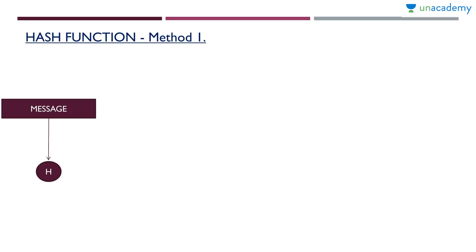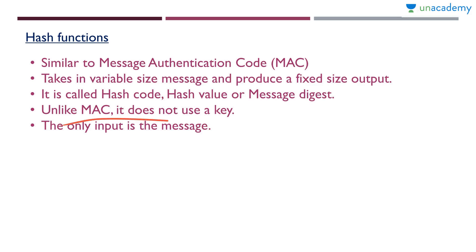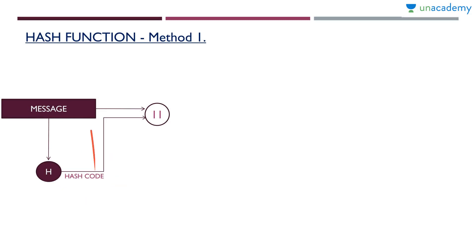There are different methods to provide authentication in different situations. So the first method is this: there will be a message and a hash function H. We apply the message into the hash function and we don't need a key — unlike MAC, it does not use a key. Only input is the message. So the message is applied to the hash function and the hash function produces a hash code. This hash code is then attached with the message.